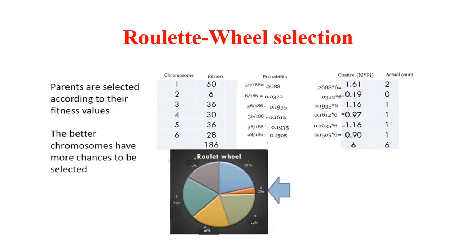An example based on Roulette wheel selection is given here. The population contains 6 individuals with their fitness values. The fitness value for individual 1 is 50, and 186 is the total fitness of all individuals in the population. The probability of each individual equals its fitness divided by the total fitness, so the probability of individual 1 is 50 divided by 186, which equals 0.2688, approximately 27%. We then represent these individuals on the Roulette wheel, where the portion each individual occupies is based on their probability value.